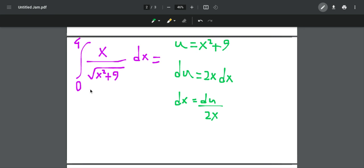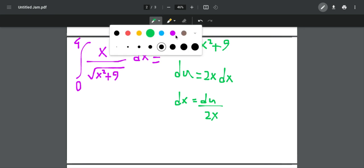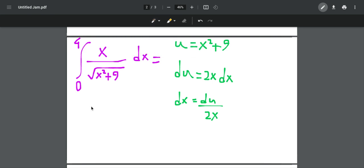Now, this is a definite integral, so we have a boundary. Usually, when we're doing indefinite integrals, we don't have a boundary. After the u-sub, we just plug in and use the integral in terms of u. But now, when we have a boundary, we should also change the boundaries because we're changing the variable.